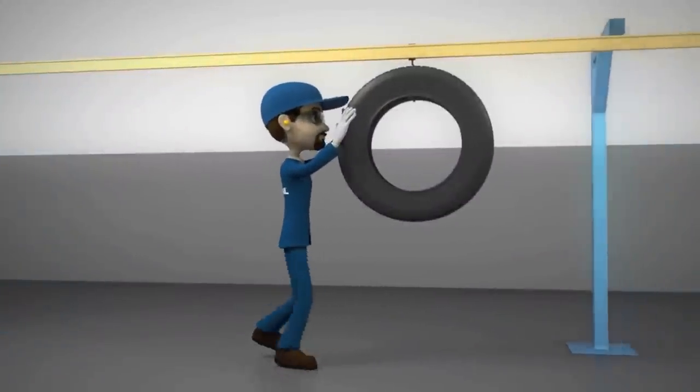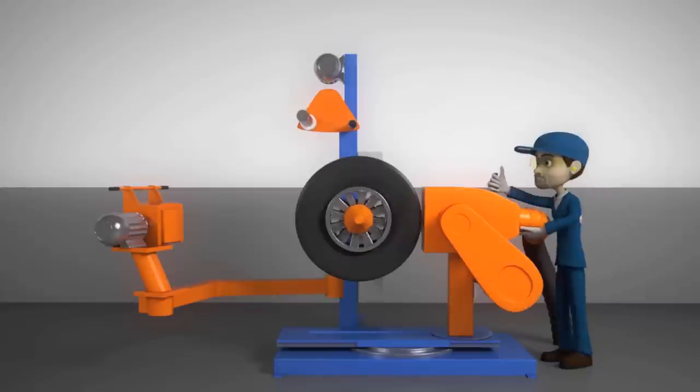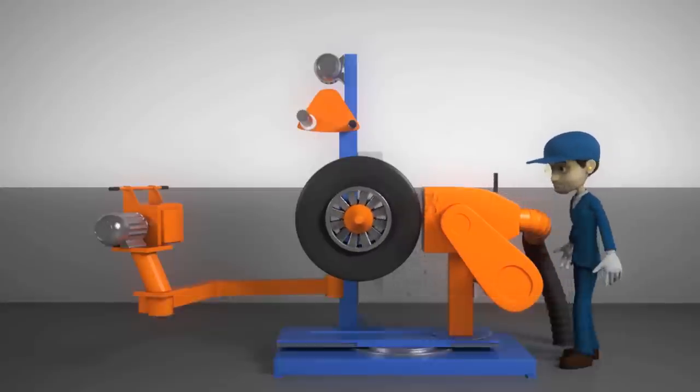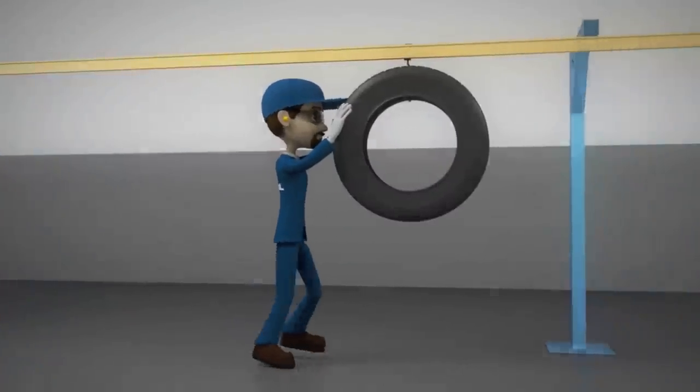At this stage, all matters to be fixed are identified. In the buffing stage, we remove the remaining tread surface. With this procedure, the tyre gets the perfect size and texture to receive a new tread.